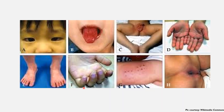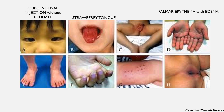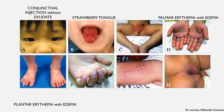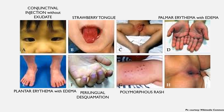These photographs demonstrate the clinical findings just mentioned: conjunctival injection without exudate, typical strawberry tongue, polymorphous rash, palmar erythema with edema, plantar erythema with edema, and periungual desquamation in the subacute phase.